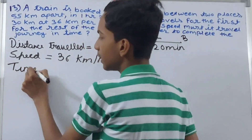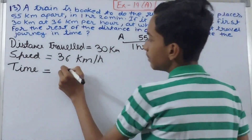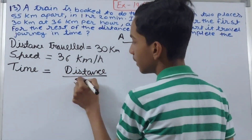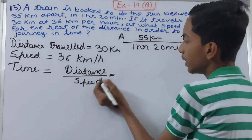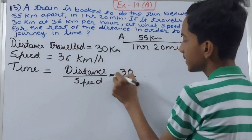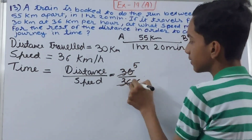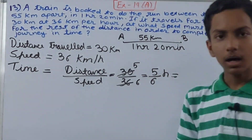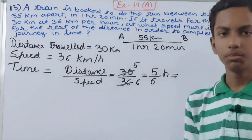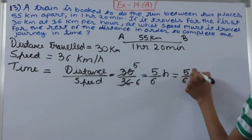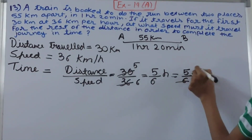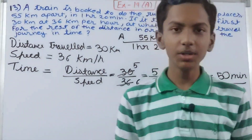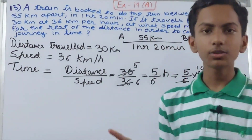We calculate the time using: time = distance divided by speed. So this gives us 30 divided by 36, which simplifies to 5/6 hours. Converting to minutes by multiplying by 60 gives us 50 minutes. So the train has taken 50 minutes to complete 30 kilometers.